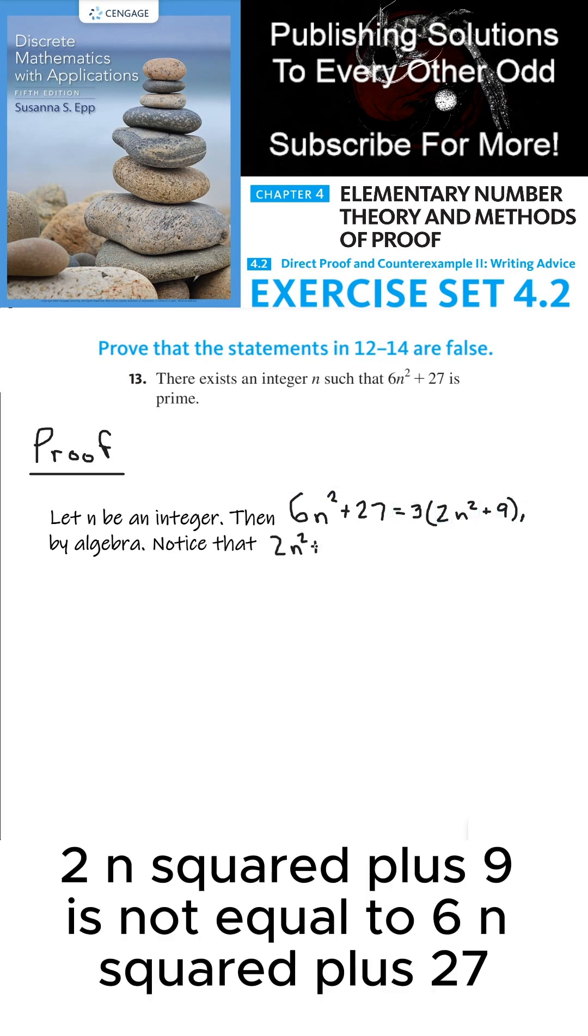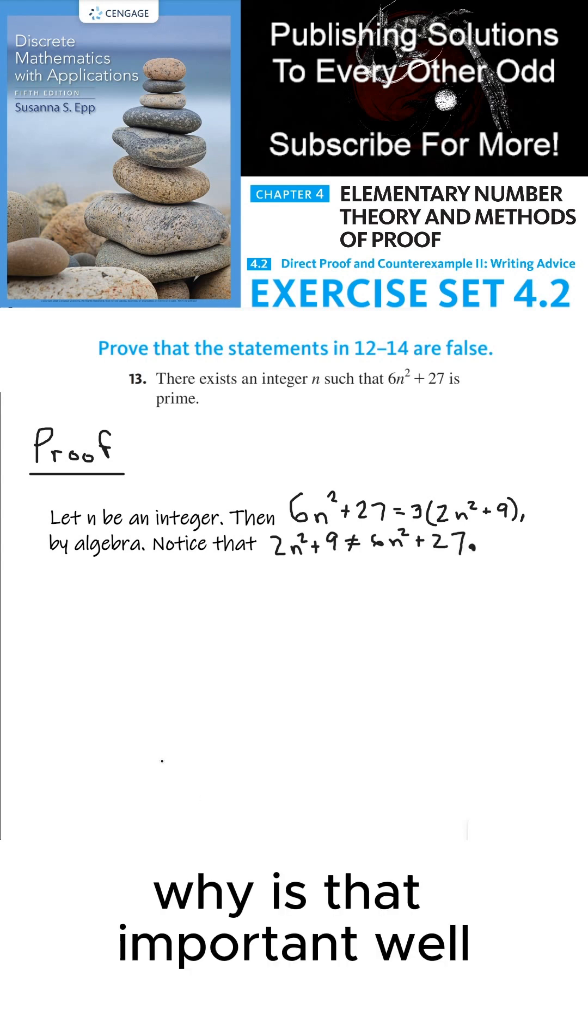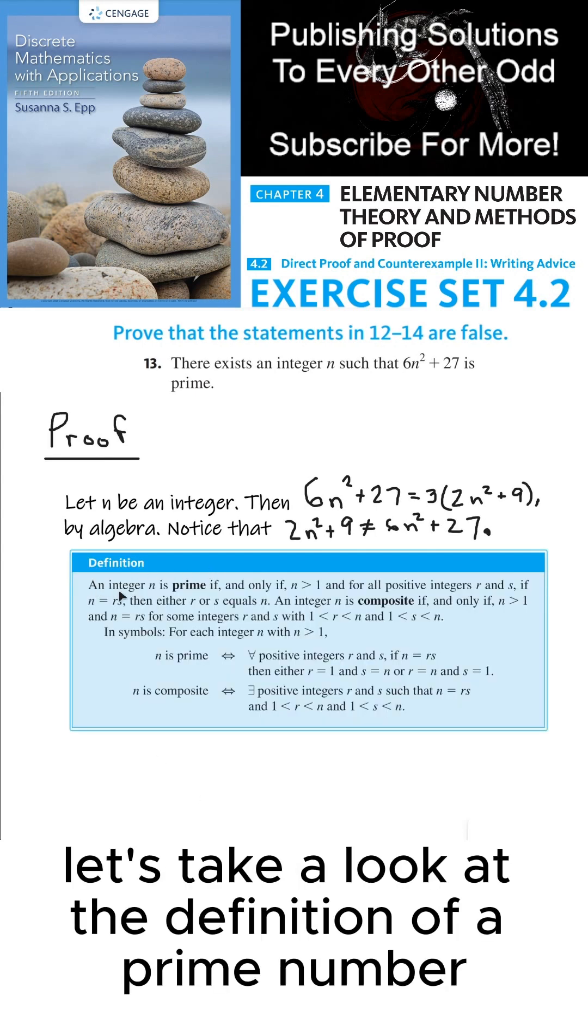2n squared plus 9 is not equal to 6n squared plus 27. Why is that important? Well let's take a look at the definition of a prime number.